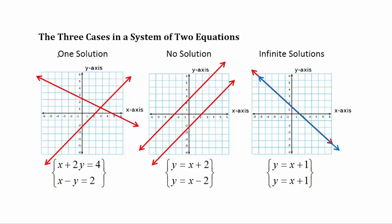The first and most common case is one solution. This occurs when we have two equations that cross in one spot. That location — the point at the center — satisfies both equations simultaneously, and we end up with one solution. The next case is no solution. This only occurs if the two equations create parallel lines. Parallel lines will never cross, so these two lines will never have a point in common and there's no solution.